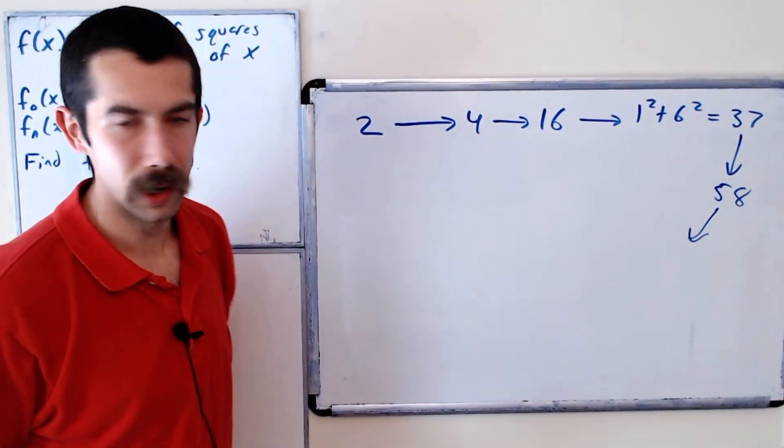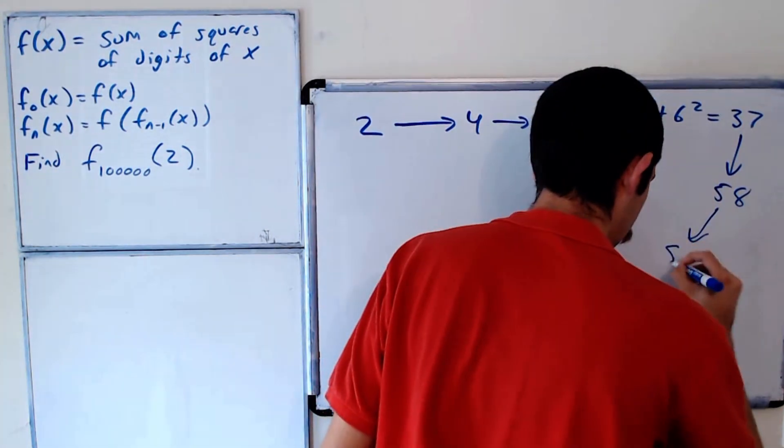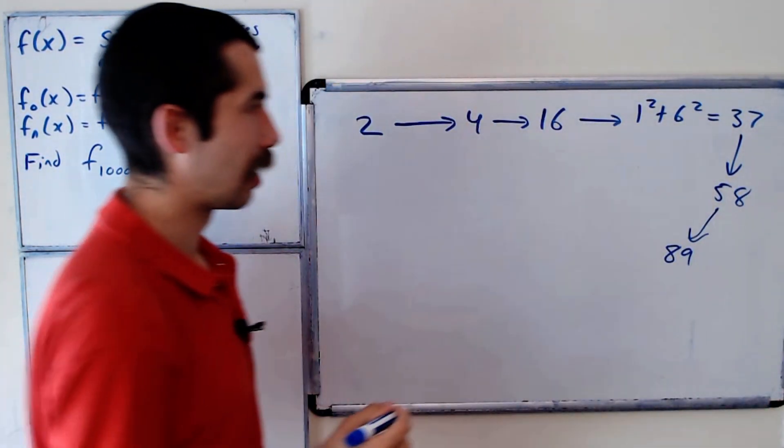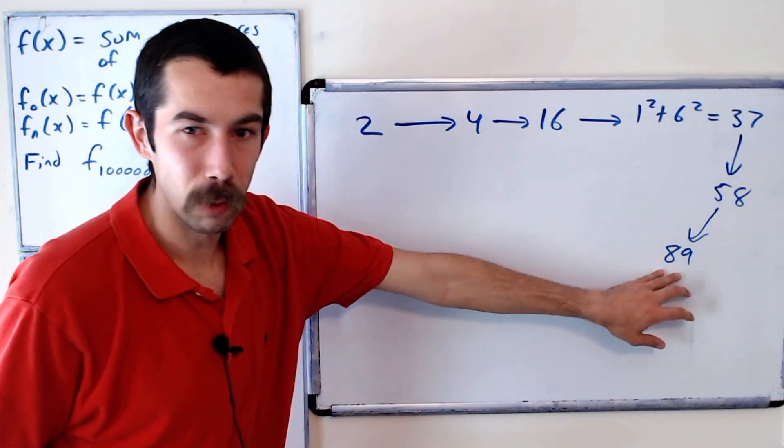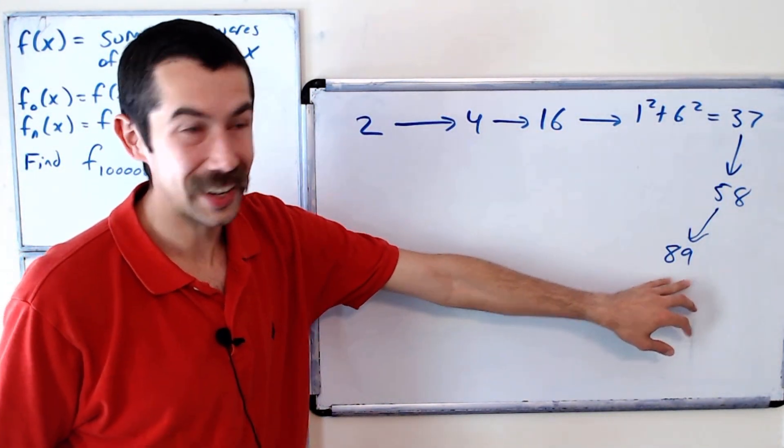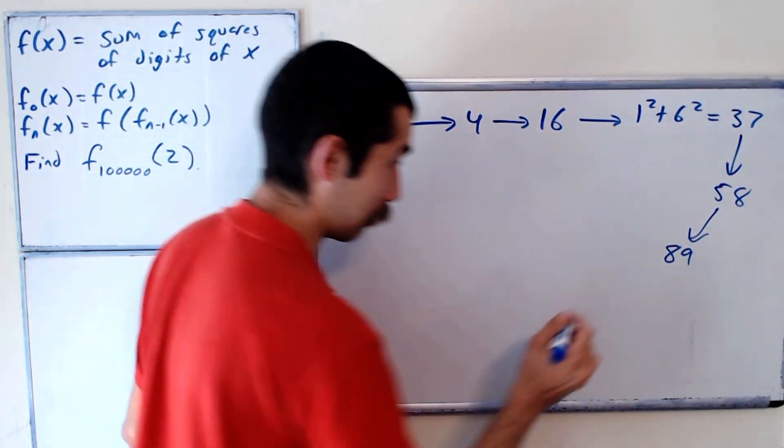25 plus 64 is 89, and now you might be wondering why am I drawing it like this. Well, it'll be clear. 64 plus 81 is 145.